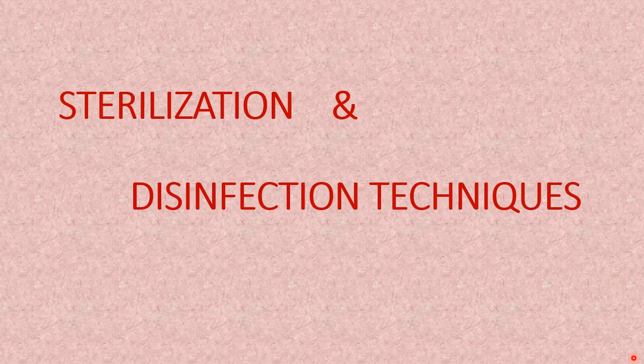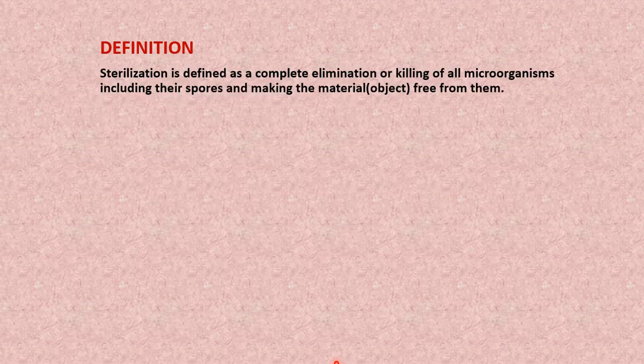In parts one, two, and three we learned about dry heat sterilization, moisture sterilization, and filtration methods of sterilization. Now in this part we are going to discuss about radiation, one of the types of physical methods of sterilization. Let's have a quick review: sterilization is the complete elimination or killing of microorganisms including spores, and making the material free from them.